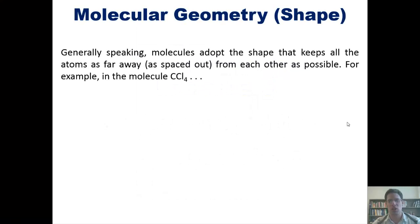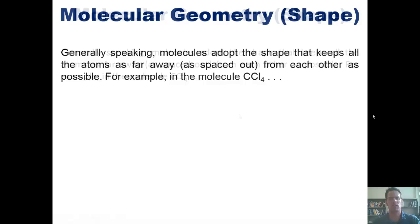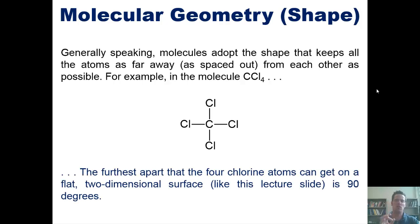Generally speaking, molecules adopt shapes that keep all of their atoms as far away or spaced out from each other as possible. For example, in the molecule carbon tetrachloride whose Lewis structure without all the lone pairs on the chlorines is shown here, the furthest apart that the four chlorine atoms can get on a flat two-dimensional surface like this screen is 90 degrees.